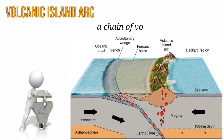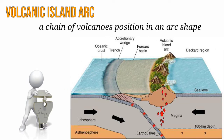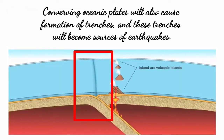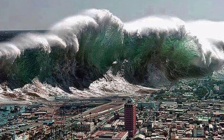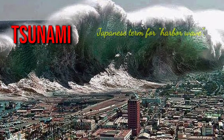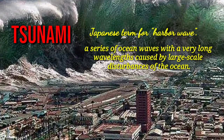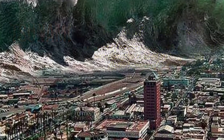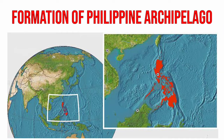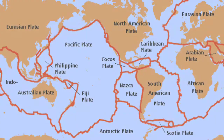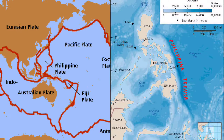A volcanic island arc is a chain of volcanoes positioned in an arc shape, as you can see in the illustration. Converging oceanic plates will also cause the formation of trenches, and these trenches will become sources of earthquakes. Underwater earthquakes, especially the stronger ones, can generate tsunamis — a Japanese term for harbor wave — a series of ocean waves with a very long wavelength caused by large-scale disturbances of the ocean. Some parts of the Philippines originate from oceanic-oceanic convergence. The territory of the Philippines is composed of many island arcs formed by several incidents of subduction.